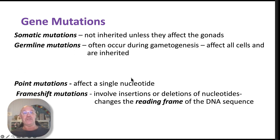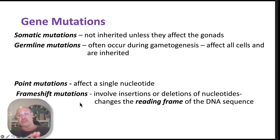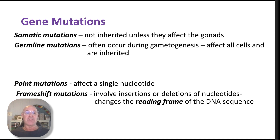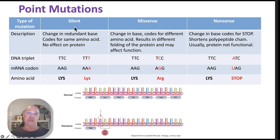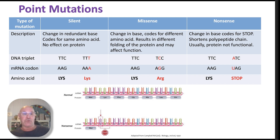In terms of gene mutations we have two different types. We have point mutations, which affect a single nucleotide. And we have frameshift mutations, where an insertion or deletion of a nucleotide, or several nucleotides, actually changes the reading frame of the DNA sequence. I'll explain what we mean by that in more detail. So, point mutations first.